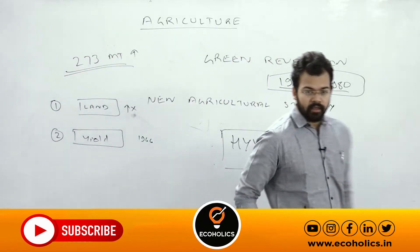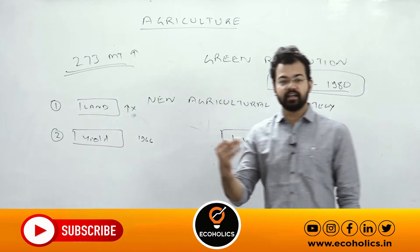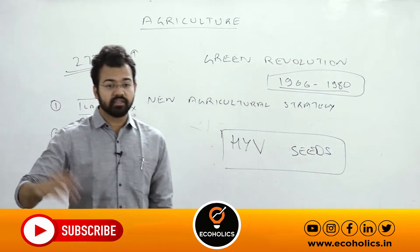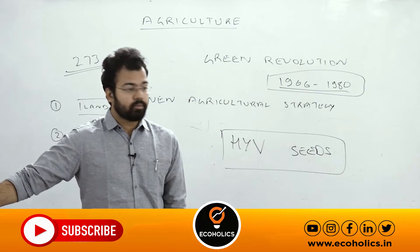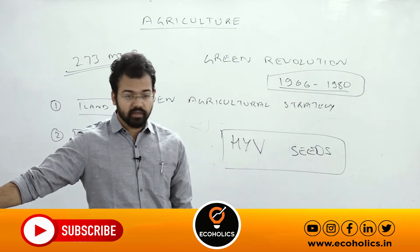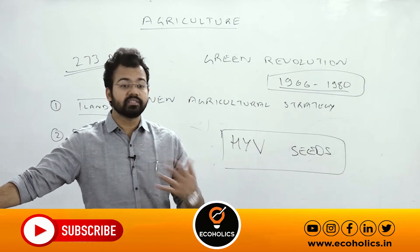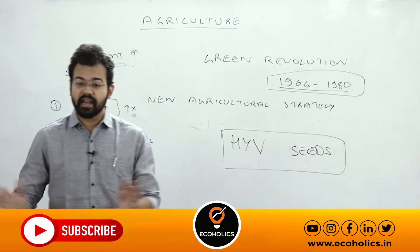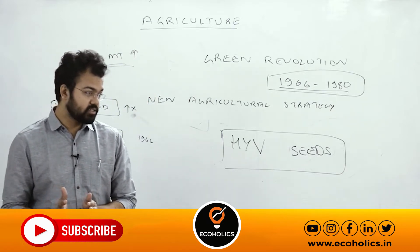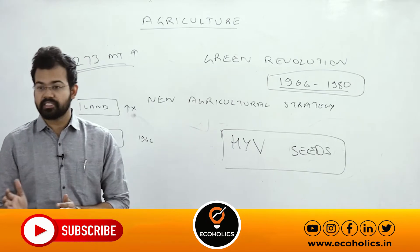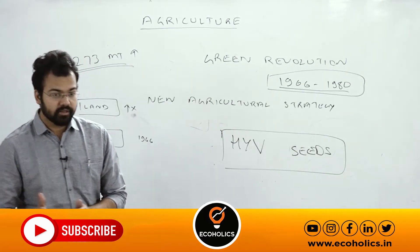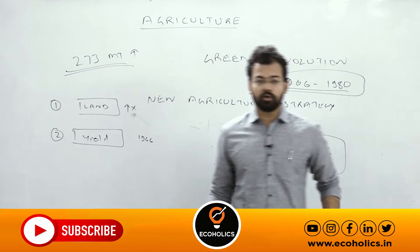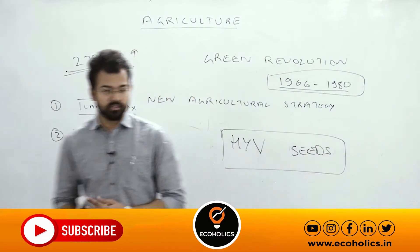But after 1995, India again experienced a decline in the productivity of agriculture. The main reason was the shrinking of land holdings in the agriculture sector, which led to low agriculture growth rate. The key reasons behind contraction or shrinking in land holdings need to be understood.